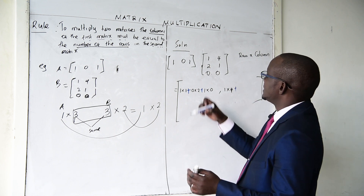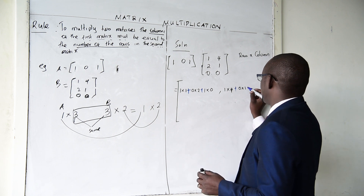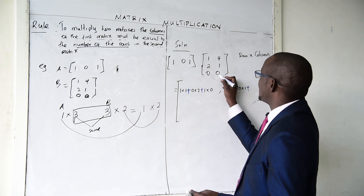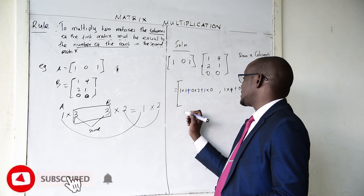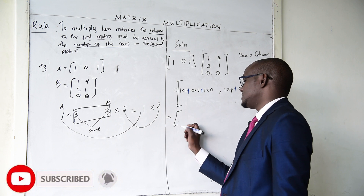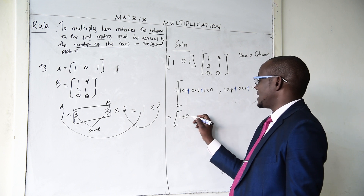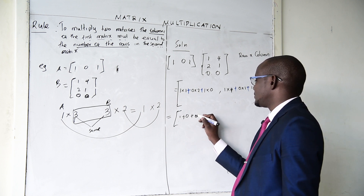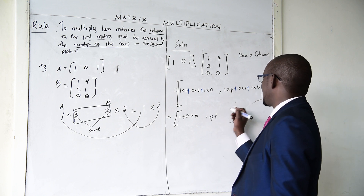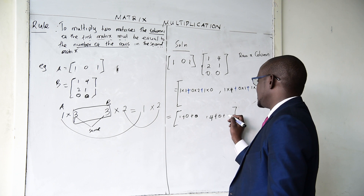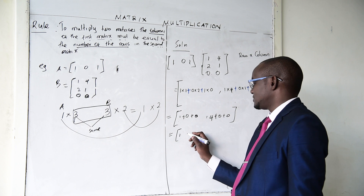For the second element: 1 multiplied by 4, plus 0 multiplied by 1, plus 1 multiplied by 0. That gives us 4 + 0 + 0 = 4. So our resulting matrix is [1, 4].